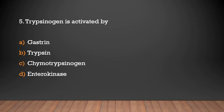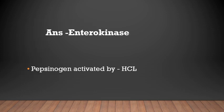Trypsinogen is activated by: diastrin, trypsin, chymotrypsinogen, or enterokinase? Answer: Enterokinase. Trypsinogen is activated by enterokinase. Pepsinogen is activated by HCl.